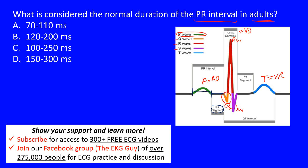The PR interval includes the P wave — it starts at the beginning of the P wave and goes to the start of the QRS complex. The QRS interval goes from the beginning to the end of the QRS complex. The ST segment starts at the J point — the end of the QRS complex — and goes up until the T wave. The QT interval goes from the start of the QRS complex all the way to the end of the T wave.